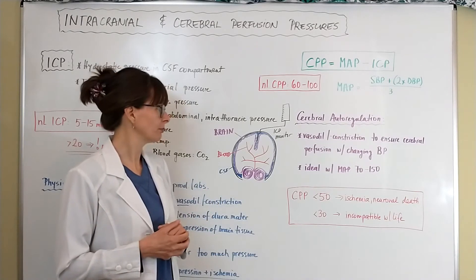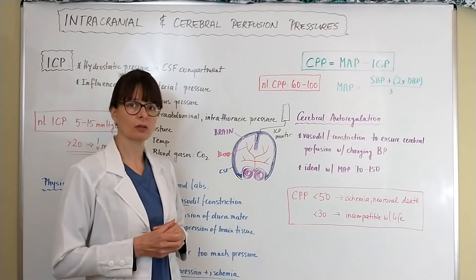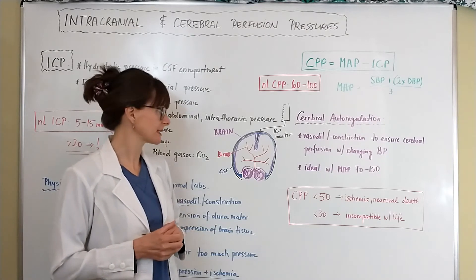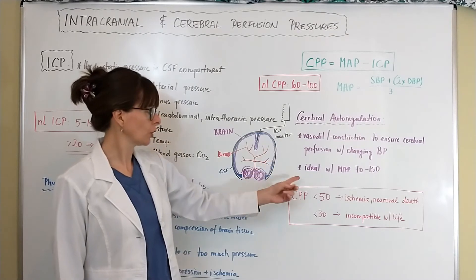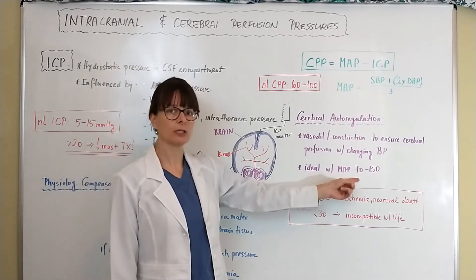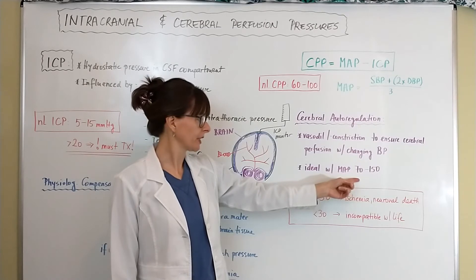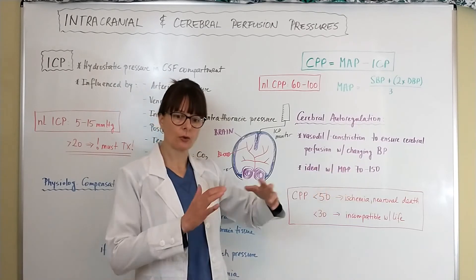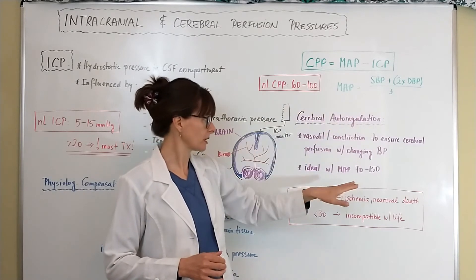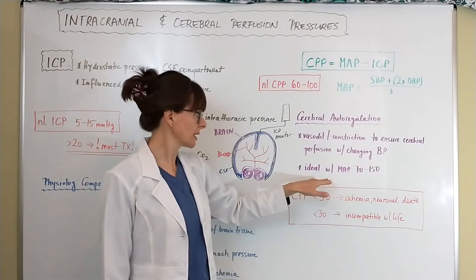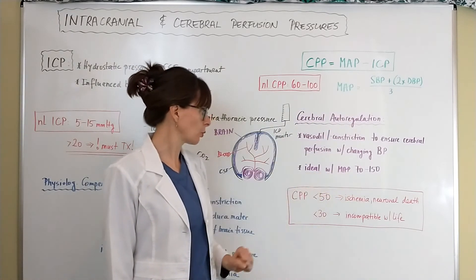And ideally this autoregulation works best when the MAP is 70 to 150. That is a pretty wide range, so actually a pretty wide range of systolic and diastolic blood pressures will accommodate this, but it's ideal with 70 to 150.